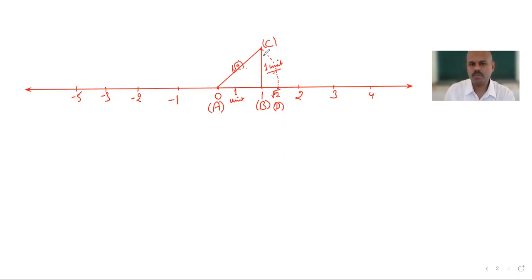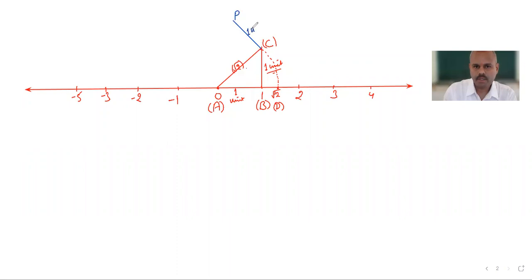This construction remains as is. Now for √3, from point C on line AC, we are going to draw a perpendicular. This perpendicular again has to be equal to 1 unit, with a 90-degree angle. We name this new point P, and then we join point A to point P.